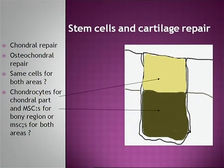Chondral repair or osteochondral repair — that is the question. Should we use the same cells for both areas? Chondrocytes for the chondral part, or MSCs for the bony region, or maybe MSCs for both areas?